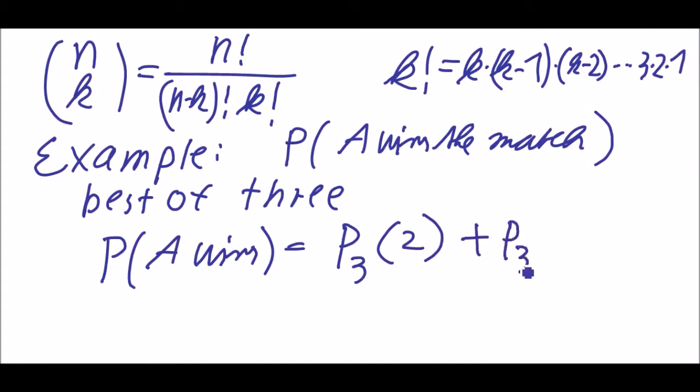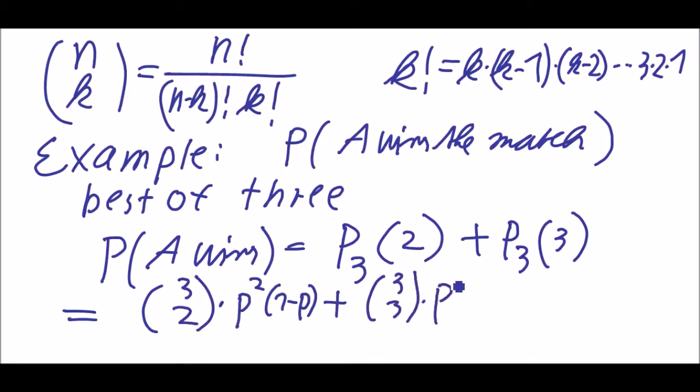And now we can calculate this. This is three choose two times p squared times one minus p plus three choose three times p cubed.